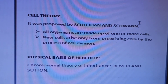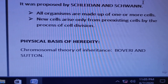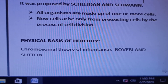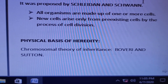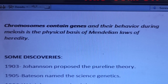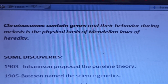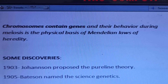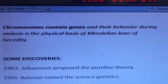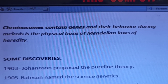The physical basis of heredity is the chromosomal theory of inheritance, proposed by Boveri and Sutton — a very frequently asked question. This theory states that chromosomes contain genes, i.e., genes are present in chromosomes. The behaviour of chromosomes during meiosis is the physical basis of Mendelian laws of heredity.